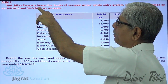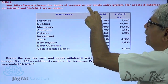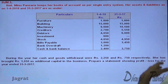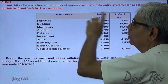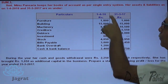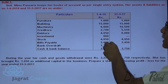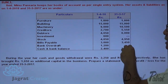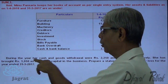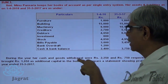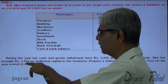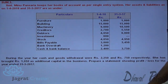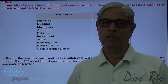Meenu Parsanya keeps her books of accounts as per single entry system. Her assets and liabilities as on 1-4-2016 and 31-3-2017 are as under. These are the details of assets and liabilities given at the beginning of the year and at the end of the accounting period. During the year, her cash and goods withdrawals were 2,250 and 750 respectively. She has brought in 1,050 additional capital into the business. Prepare a statement showing the profit or loss for the year ended 31-3-2017.